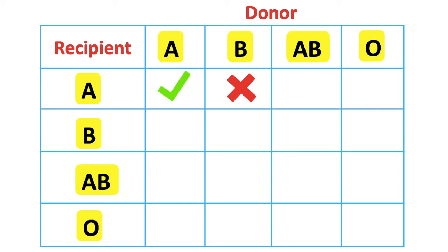Type A recipients can't receive type AB blood either. Although AB blood has A antigens, it also has B antigens, which will cause an immune response. They can also receive type O blood, because this type doesn't have A or B antigens, and therefore the body won't see it as foreign.